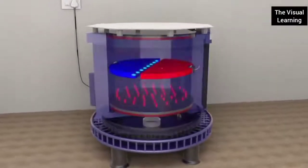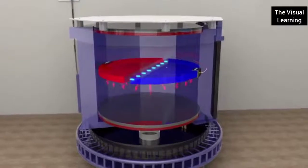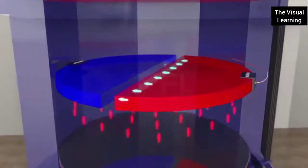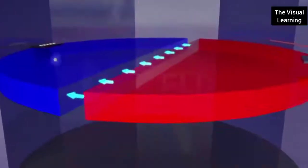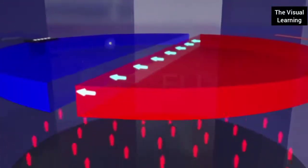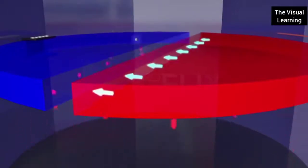A cyclotron is a device that is used to accelerate particles such as electrons, protons, and deuterons. High-speed charged particles are used in experiments of atomic and nuclear physics.